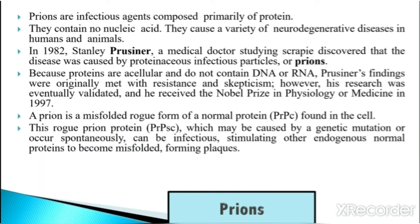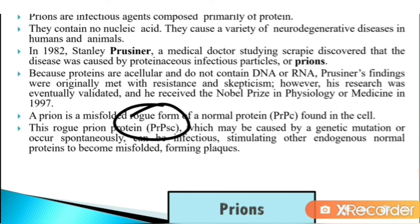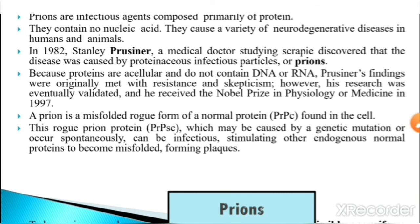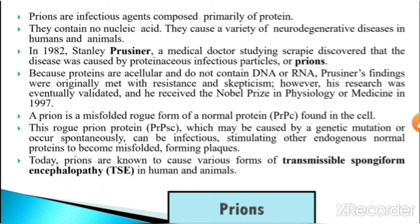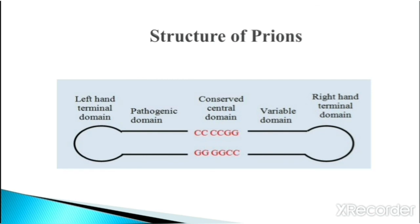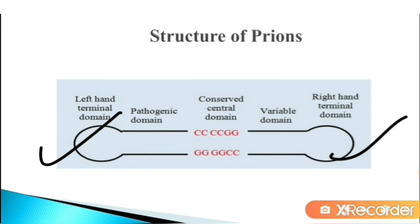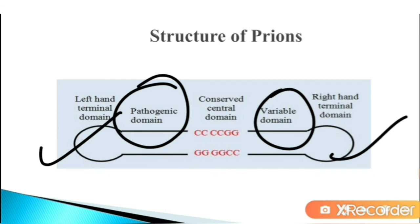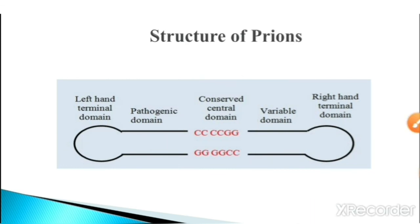A prion is a misfolded rogue form of a normal protein called PrPC, found in the cell. This rogue prion protein, which may be caused by genetic mutation or occur spontaneously, can be infectious, stimulating other normal endogenous proteins to become misfolded and form plaques. Prions are known to cause various forms of transmissible spongiform encephalopathy (TSE) in humans and animals. The structure of prions includes a left-hand terminal domain, right-hand terminal domain, pathogenic domain, variable domain, and a conserved central domain region.